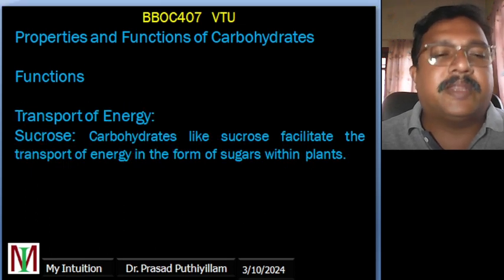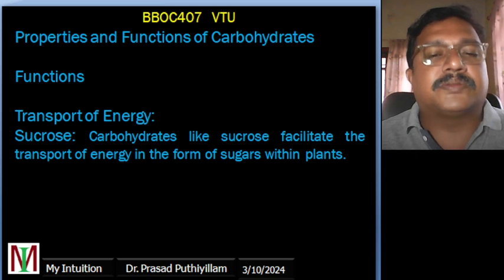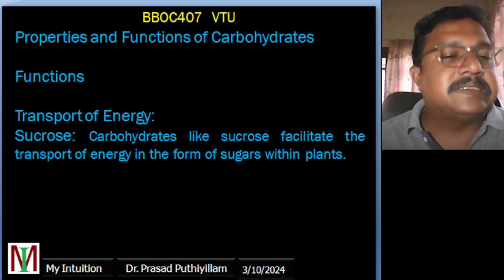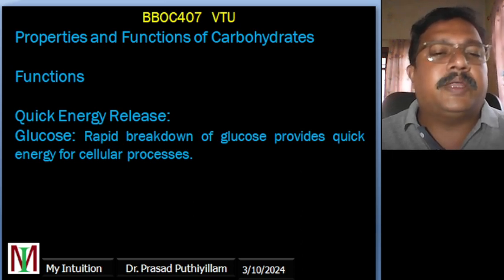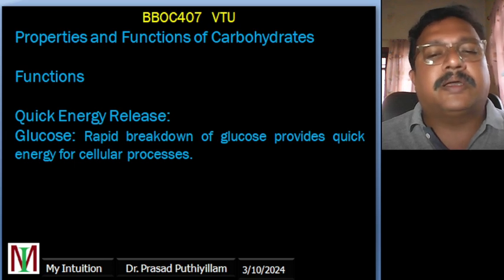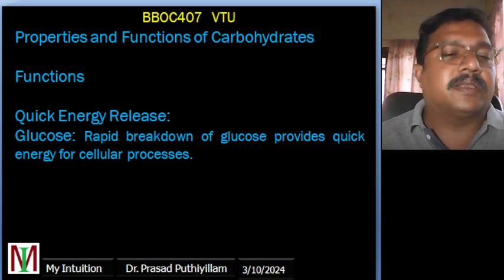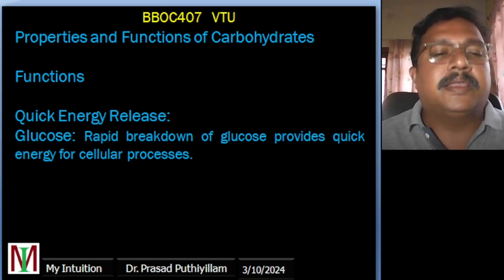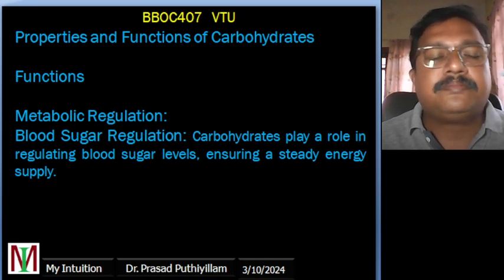Sucrose serves as the primary transportable form of energy in plants. It is synthesized in leaves through photosynthesis and then transported through the plant to provide energy for various processes in different tissues. Glucose also enables quick energy release — its simple structure allows for rapid breakdown through cellular respiration, providing immediate energy for muscle activity and brain function during times of high demand.